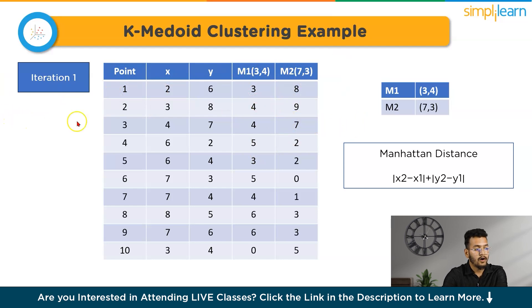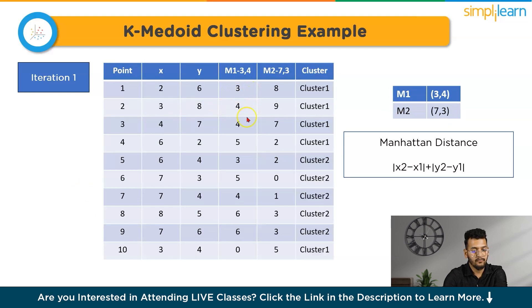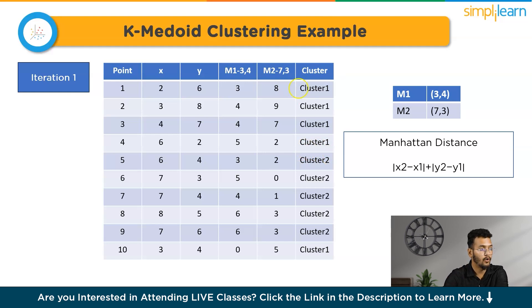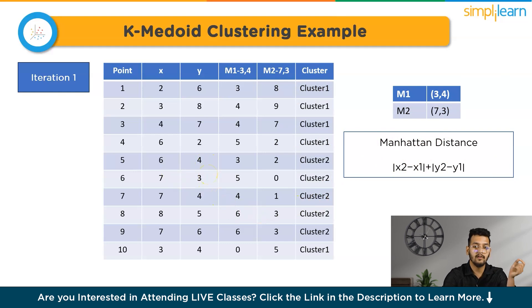We then assign data points to clusters based on closest medoid distance. Points in cluster one include (2,6), (3,8), (4,7), and (3,4). Points in cluster two include (7,4), (6,2), (6,4), (7,3), and (8,5). After assigning clusters, we calculate the cost — the sum of distances of all points from their cluster medoid — which comes to 22 in this first iteration.